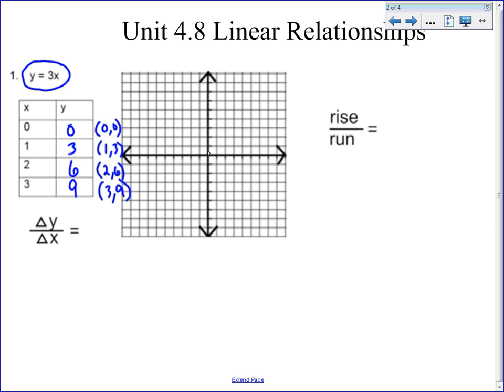And so we can graph those: 0, 0, over 1, up 3, over 2, up 6, over 3, up 9. So as you can see, that is forming a straight line, which is good because it was supposed to form a linear relationship. And linear tells us that it's going to be a straight line.